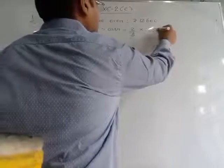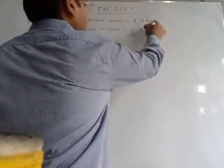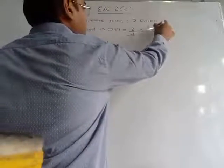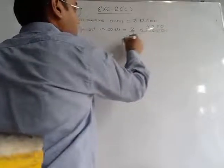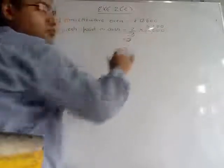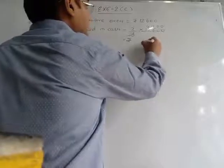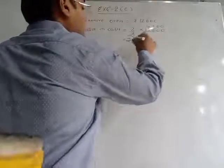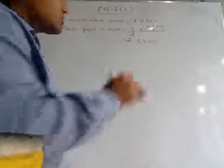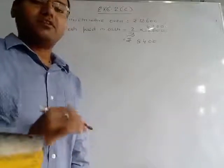Total cost is 12,600. We multiply two-thirds by 12,600. The twos cancel, and on multiplying these two numbers we get 8,400 rupees. So this much money he gave in cash.